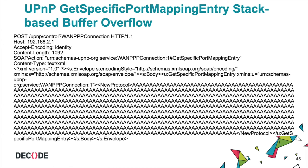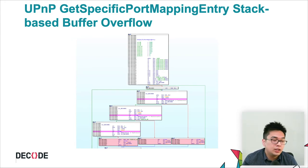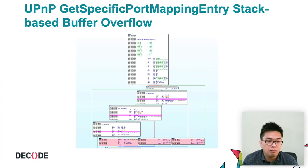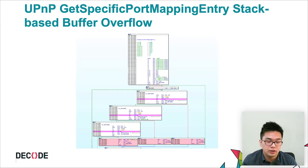If the NewProtocol value is a very long string, it will crash the router. This is the control flow diagram of the vulnerable surface, and all the pink boxes are actually vulnerable string copy calls. In this diagram, there are three stack buffer overflow vulnerabilities.